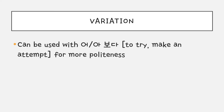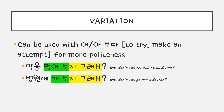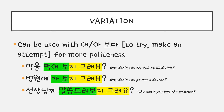Here are some variations. You can use 지 그래요 with another grammar. For example, you can use it with 어/아 보다, which means to try or make an attempt to experience something. Adding 어/아 보다 adds more politeness. For example: 약을 먹어보지 그래요. 병원에 가보지 그래요. 선생님께 말씀드려보지 그래요.